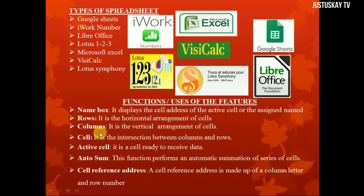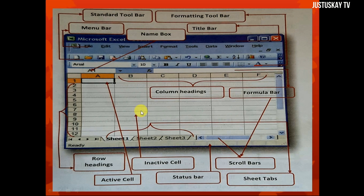Columns are the opposite of rows. If a row is the horizontal arrangement of cells, then a column is the vertical arrangement of cells. This is what a column looks like — a vertical arrangement of cells.